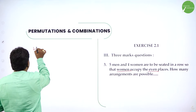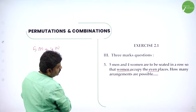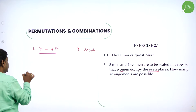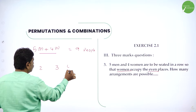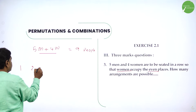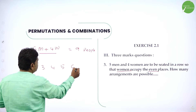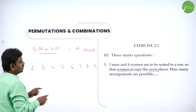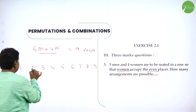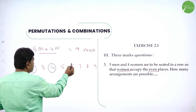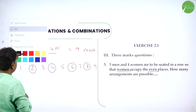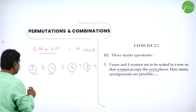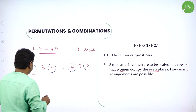I have 5 men and 4 women — total 9 people, so 9 places. The restriction is: women should occupy even places — that is 2nd, 4th, 6th, 8th. How many even places are there? We have 4 even places. How many women? 4 women. So 4 women in 4 even places can be arranged.